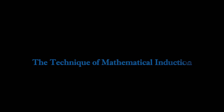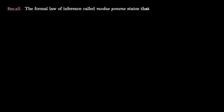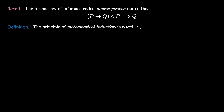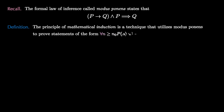One technique to prove these kinds of formulas is known as mathematical induction. Recall that the formal law of inference known as modus ponens states that if you know p implies q and you know p, then you must also know q. The principle of mathematical induction utilizes modus ponens to prove statements of the form: for all n greater than or equal to n zero, p of n, where p of x is some predicate.